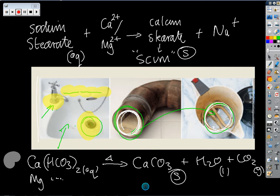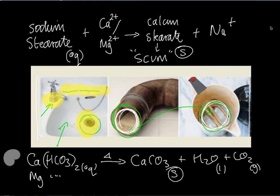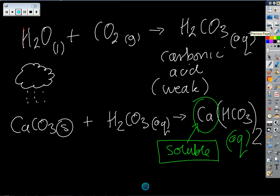The hard water we've just spoken about is called temporary hard water. Calcium hydrogen carbonate or magnesium hydrogen carbonate creates temporary hardness, and the reason it's called temporary is because it can be removed by boiling. There's another type of hardness - permanent hard water - which can't be removed by boiling and is made in a slightly different way.